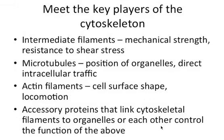So here are the key players. You've got your intermediate filaments, which are more about mechanical strength and resistance to shear stress. Microtubules are involved with positioning of organelles and directing intracellular traffic. Actin filaments are involved in the shape of the cell surface and movement of cells. And then there are all these accessory proteins that link cytoskeletal filaments to organelles or to each other and control their function — proteins that cause microtubules to grow, come apart, interact with vesicles. There's a ton of proteins we're going to learn about.